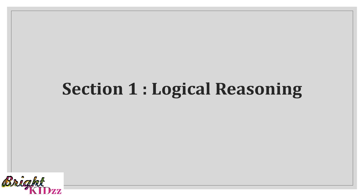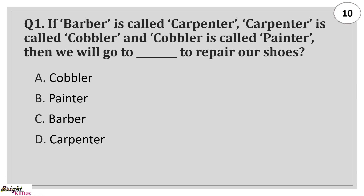Section 1: Logical Reasoning. If barber is called carpenter, carpenter is called cobbler, and cobbler is called painter, then we will go to Dash to repair our shoes. Answer: Painter.